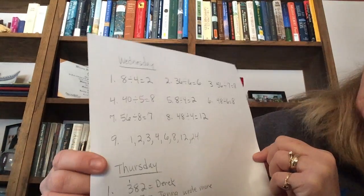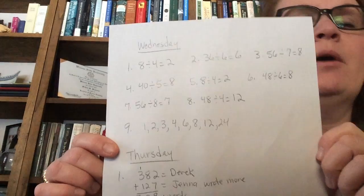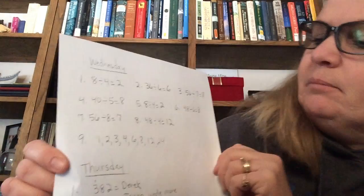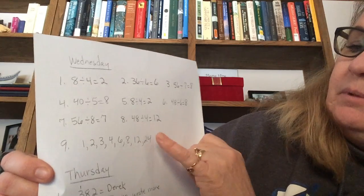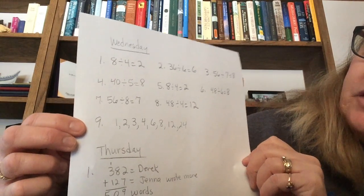For Wednesday, we did a little division. On number 8, a little tricky, but all you had to do was think about what number added together four times would give me 48. Number 9, you had to think of the factors of 24.